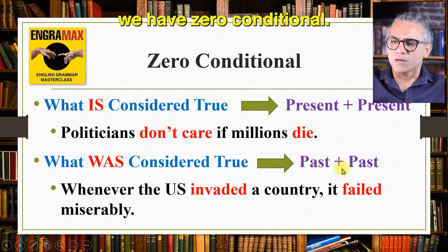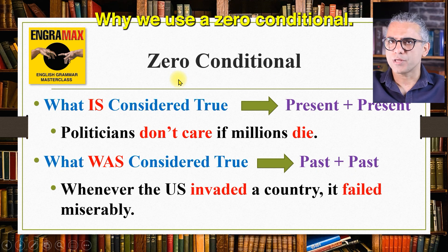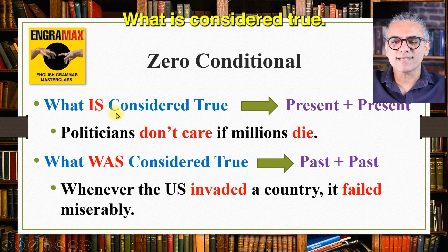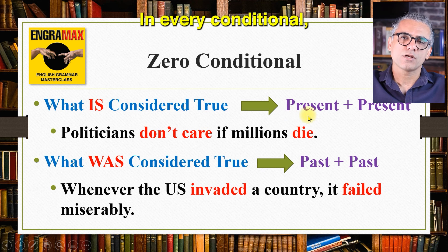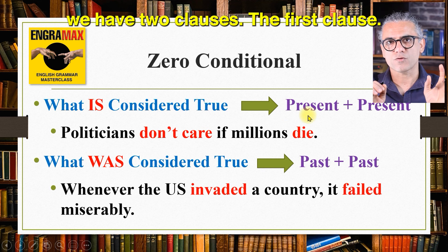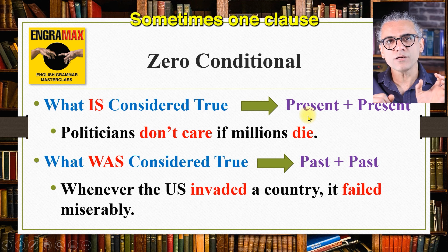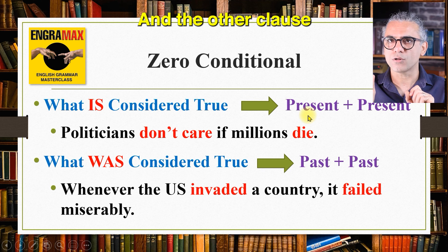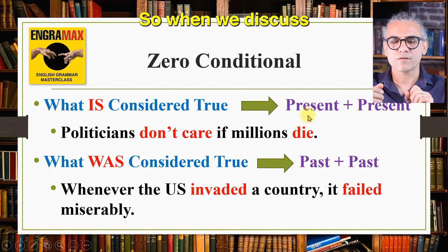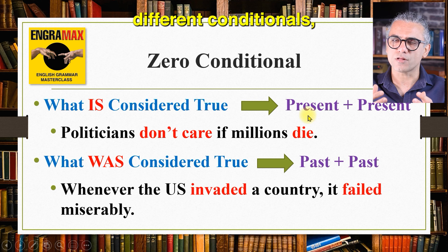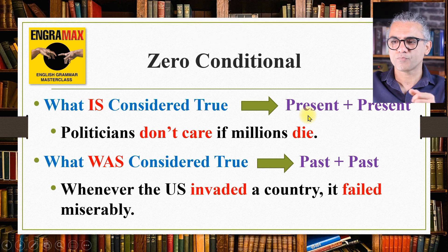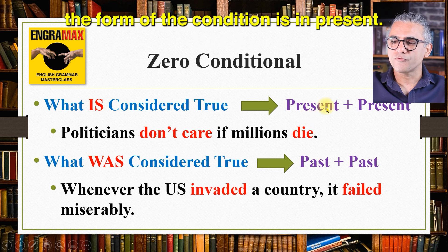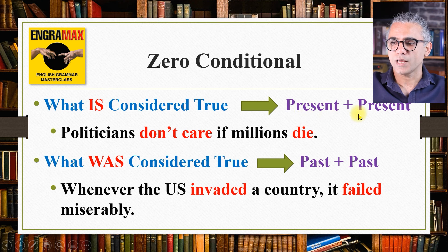First, we have zero conditional. Why do we use zero conditional? What is considered true? In every conditional we have two clauses. One clause is the condition clause and the other clause is the consequence clause. So when we discuss different conditionals, we are talking about the form of the condition clause and the form of the consequence clause. For zero conditional, the form of the condition is in present and the consequence is also in present.